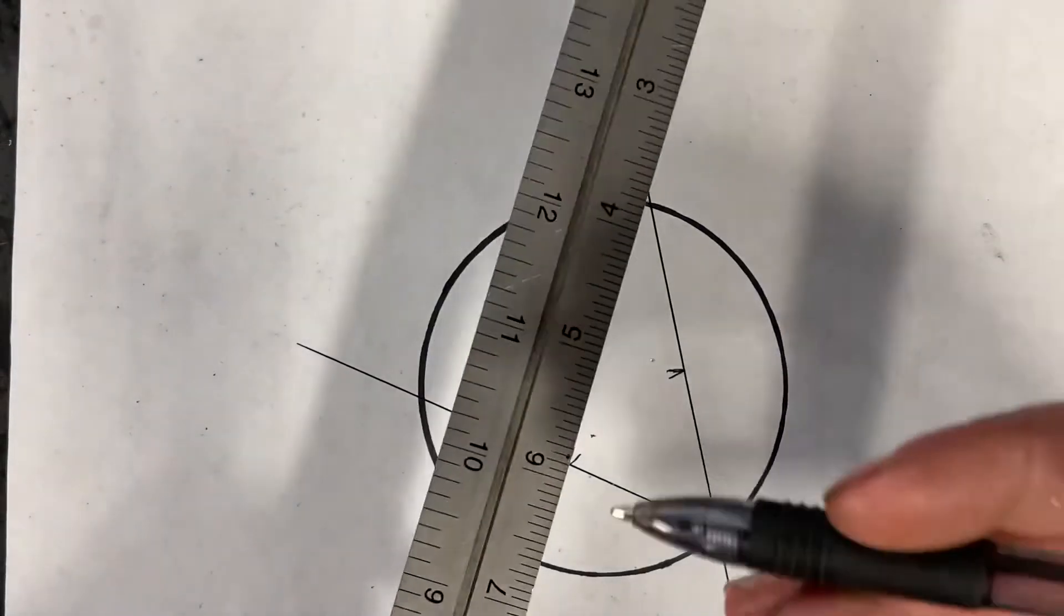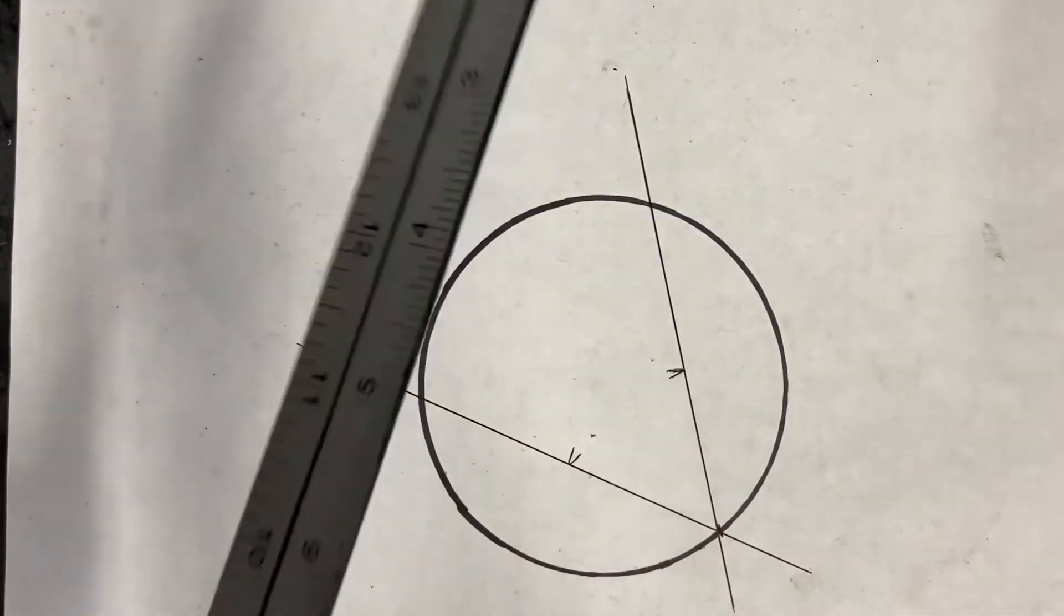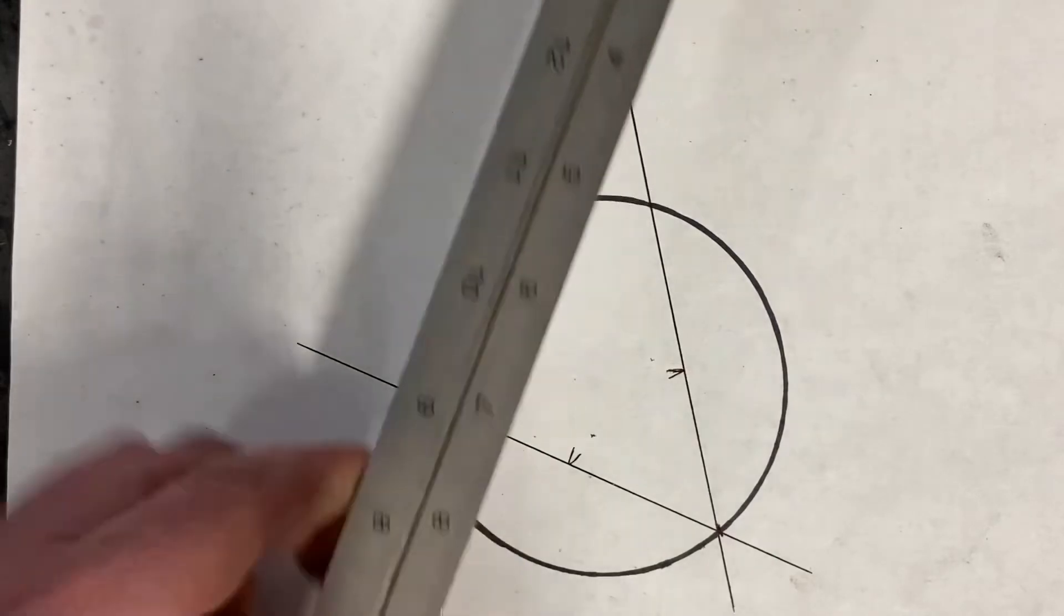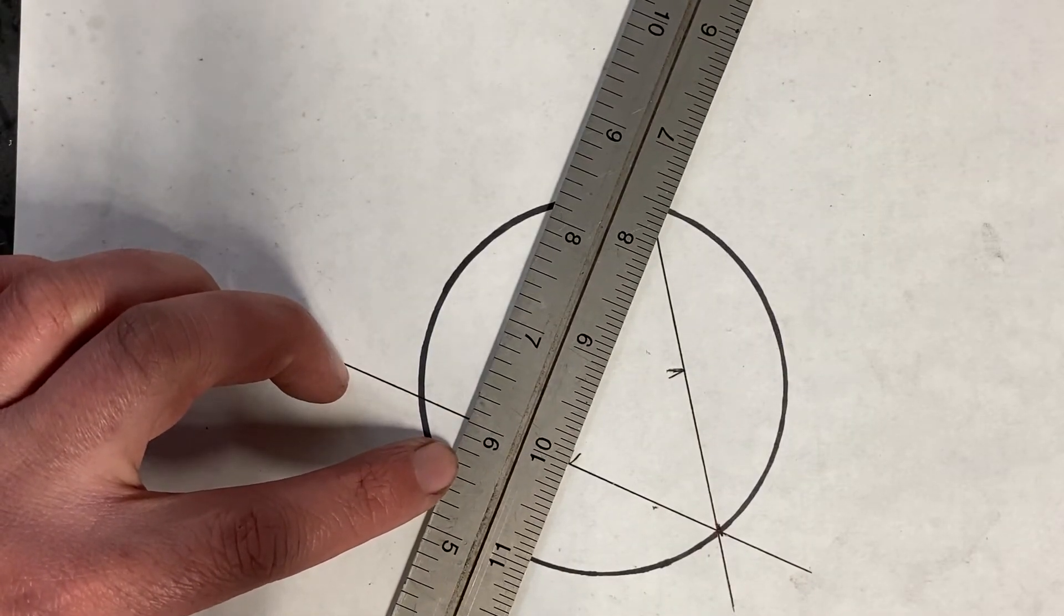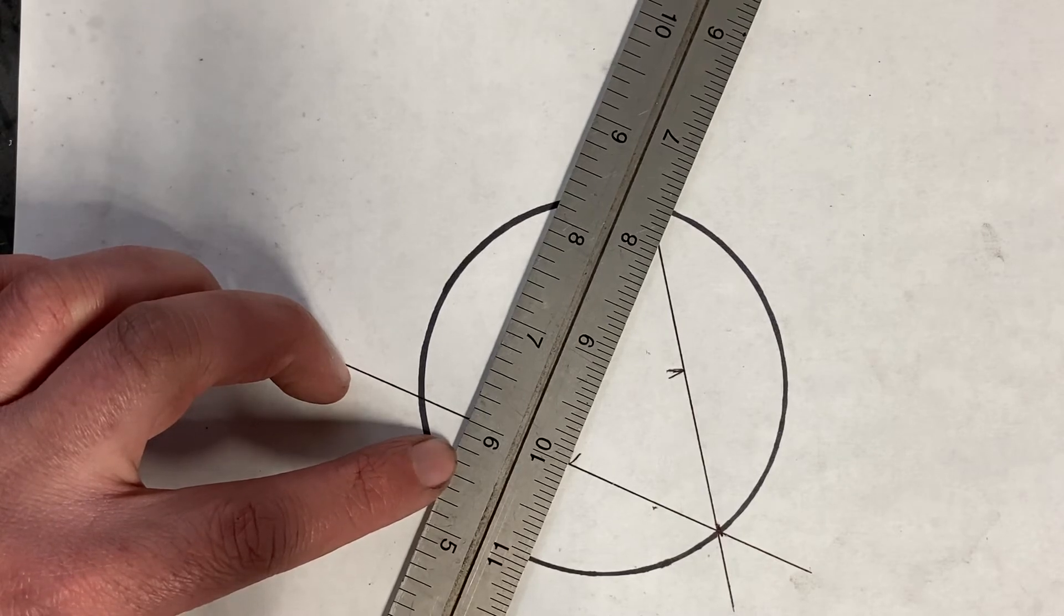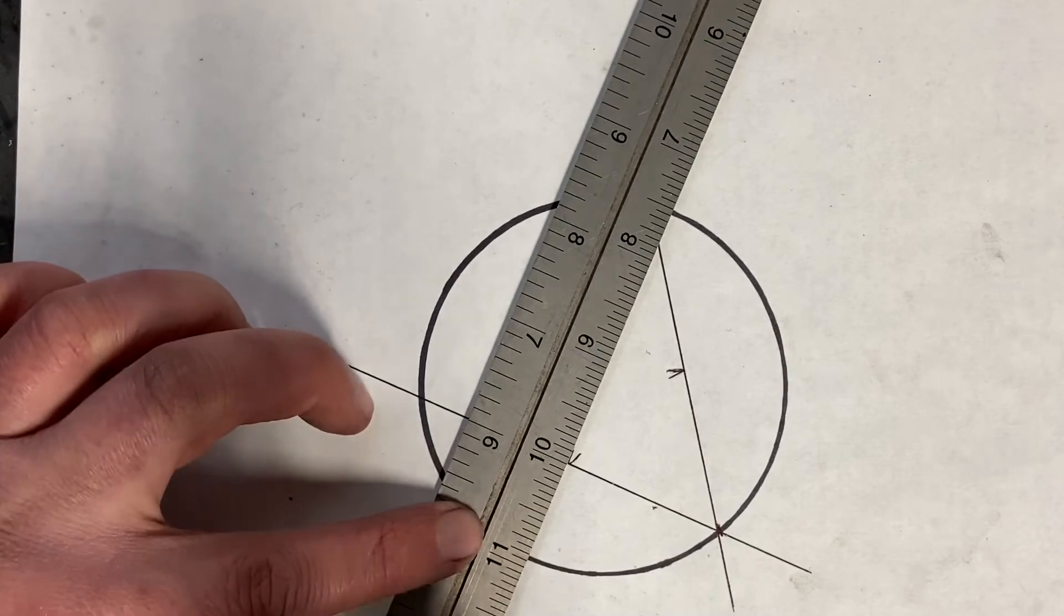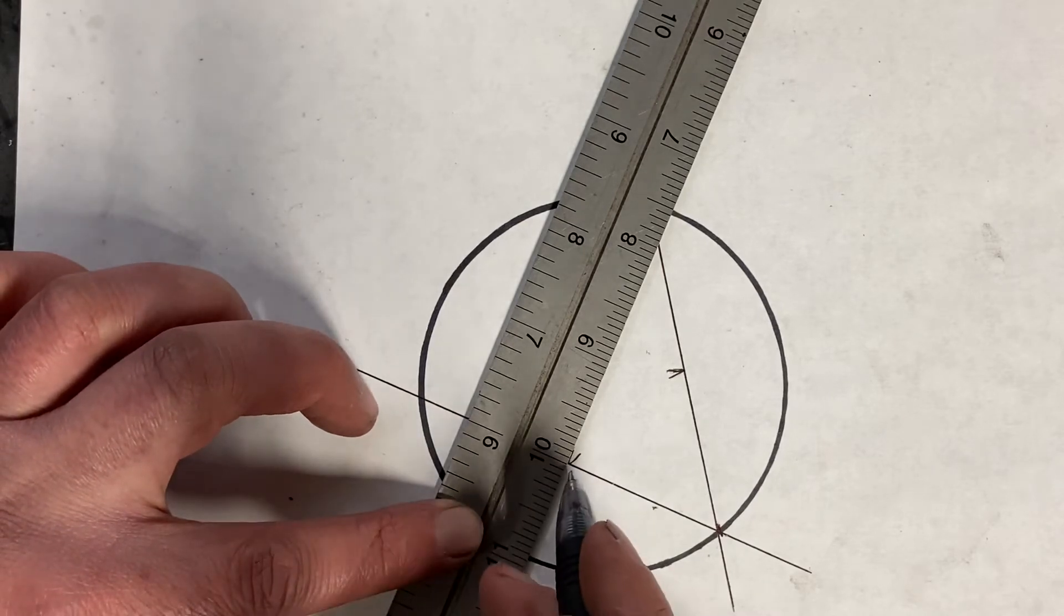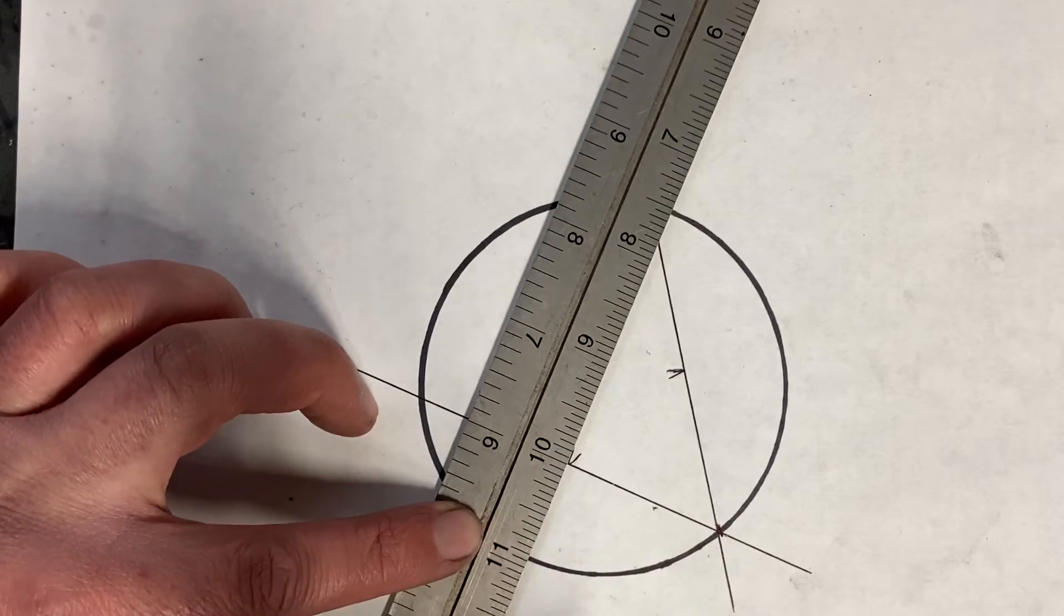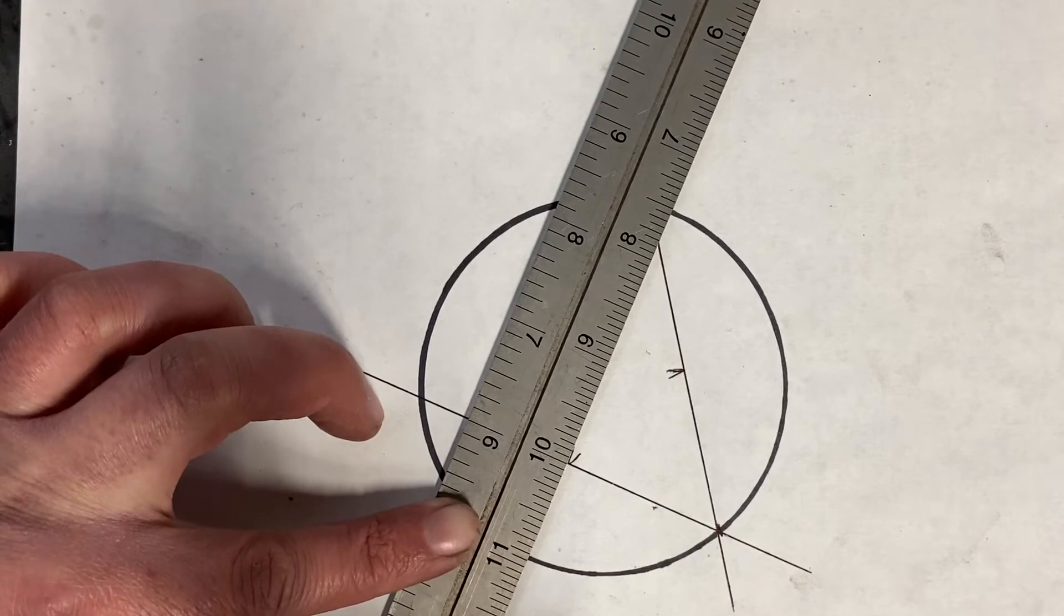So the way I make it work with this when I'm in a pickle and this is all that I have, is I'll pick any old measurement here. I like to go 10 and I just line up the 10 line and the 9 line up against this V the best I can by eye.